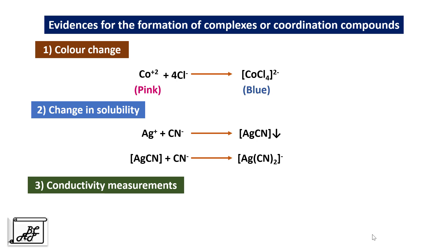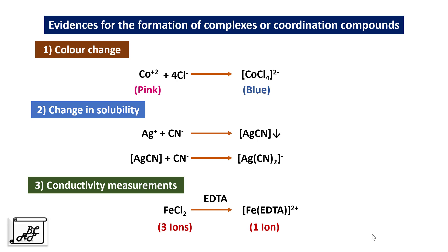The third evidence is conductivity measurements. Here I will take the example of ferrous chloride. To this solution, if we add EDTA solution, it will form an iron-EDTA complex. In the case of the reactant, there are three ions present in solution with different transport numbers — that is, the ability to travel in solution — so their conductivity will be different. When FeCl2 reacts with EDTA and forms a complex, the solution consists of only one ion. As the number of ions has changed, the conductivity changes, indicating formation of a coordination compound.